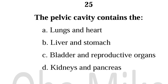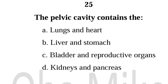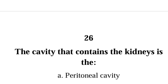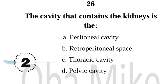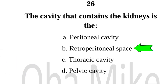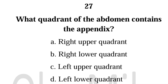Number 25. The pelvic cavity contains the bladder and reproductive organs. Number 26. The cavity that contains the kidneys is the retroperitoneal space.